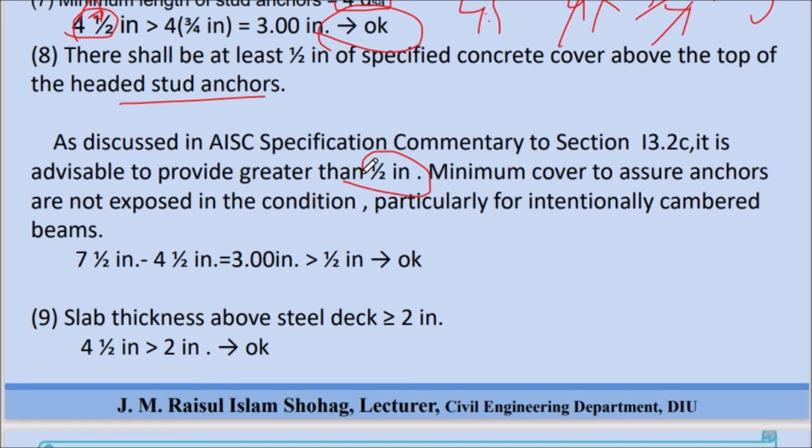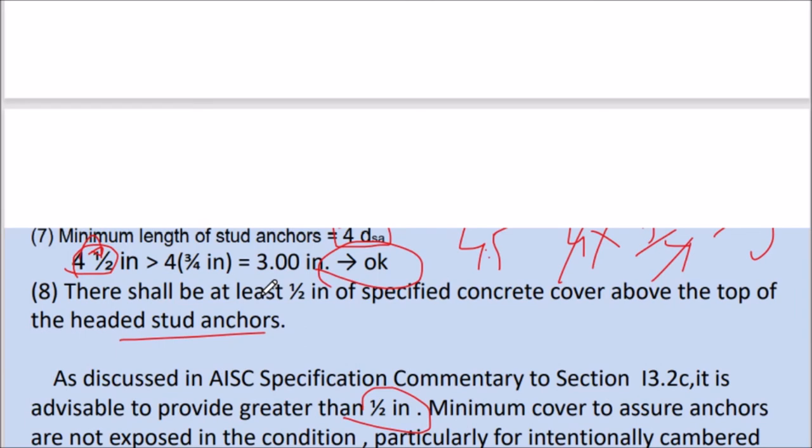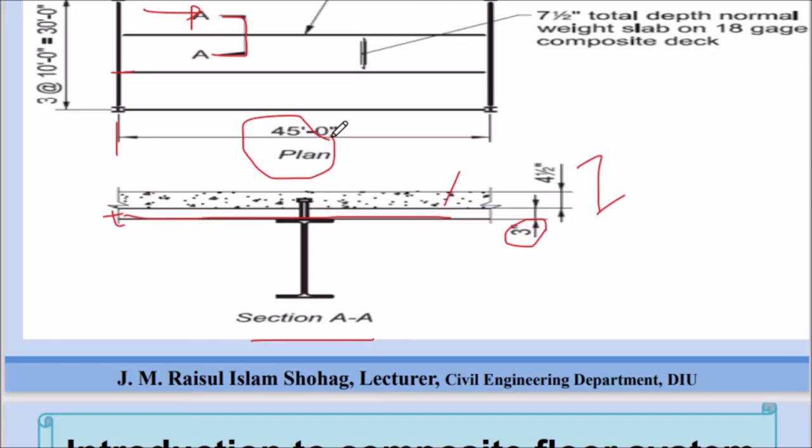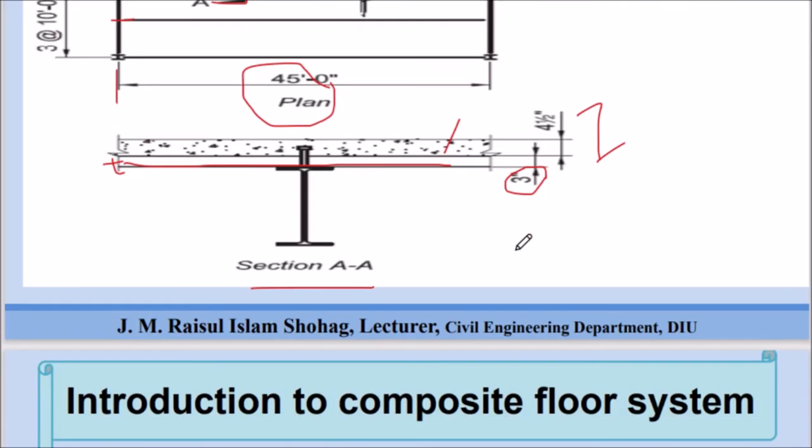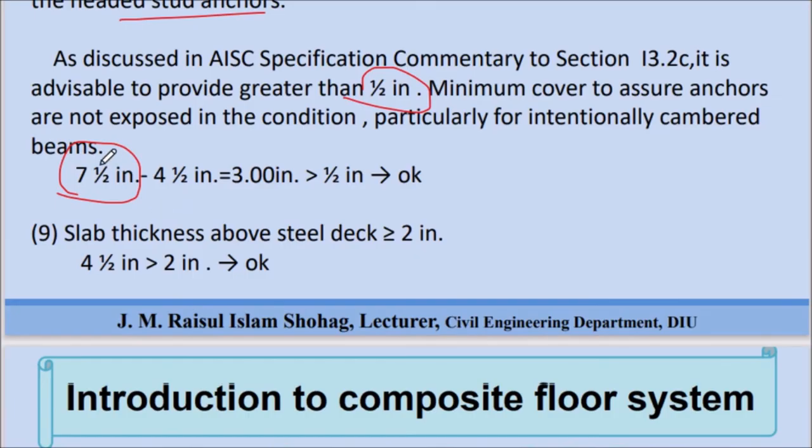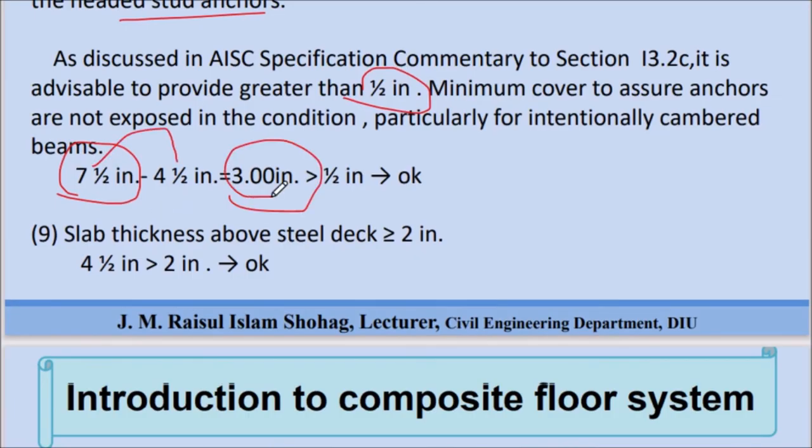There shall be at least 1/2 inch of specified concrete cover above the top of the headed stud anchors. As discussed in AISC specifications commentary, it is advisable to provide greater than 1/2 inch minimum cover to assure anchors are not exposed in conditions, particularly for intentionally cambered beams. The total thickness is concrete slab plus rib height, totaling 6 1/2 inches. The anchor length above the top of the deck should provide adequate cover.